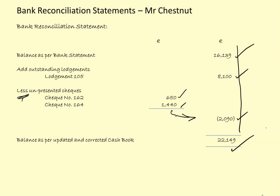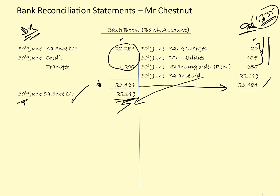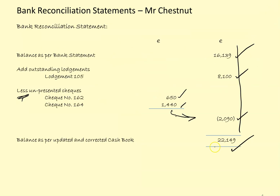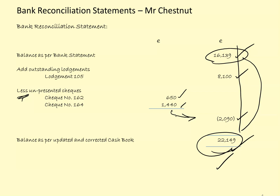Let's quickly check that — we can see 22,149 in the cash book matches. So I have reconciled the bank statement with the cash book. Everything can be explained by timing differences. If we couldn't reconcile them using timing differences for lodgements and checks, there would be an error in the system requiring investigation.